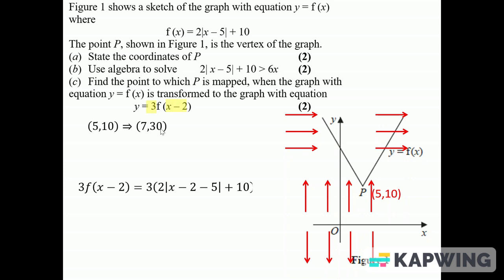And then 3 of them will look like this. If you multiply the bracket out, simplify the modulus, you've got |6(x - 7)| + 30, and then that's got a minimum point where x is 7 and y is 30.